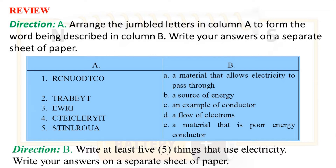Direction C. Arrange the jumbled letters in column A to form the word being described in column B. Write your answers on a separate sheet of paper. Also write at least 5 things that use electricity. Write your answers on a separate sheet of paper.